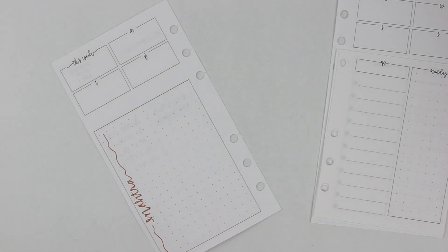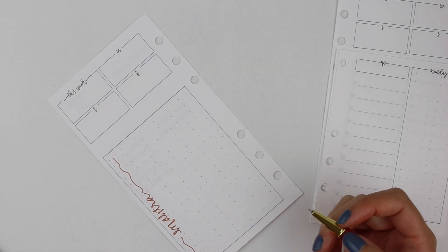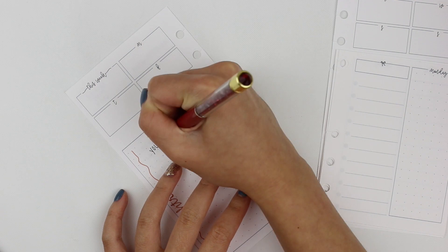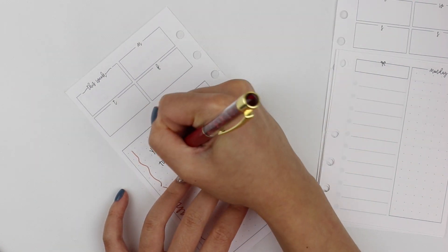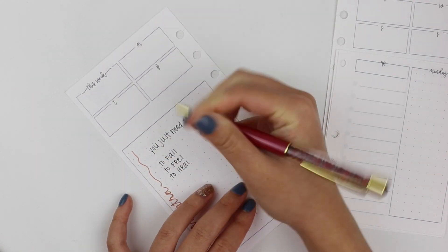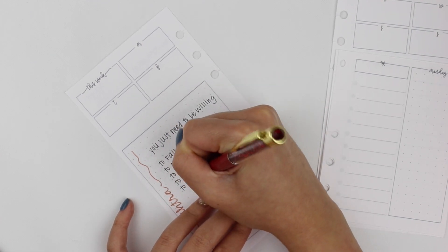These are the Dutch door inserts from Jesenia Printables. On the side here, I like to write down a mantra for the week. So this week is from Danielle Dobie. She just came out with her book, so I thought it was fitting.